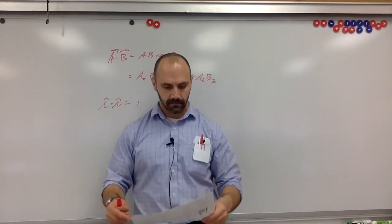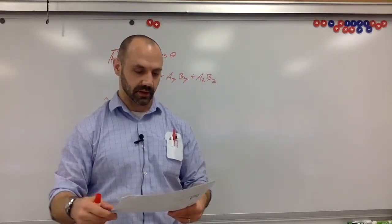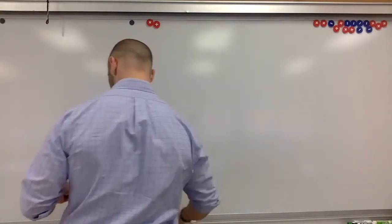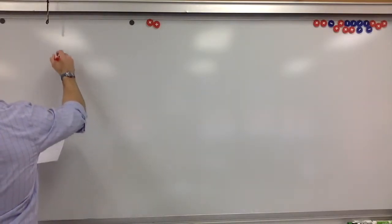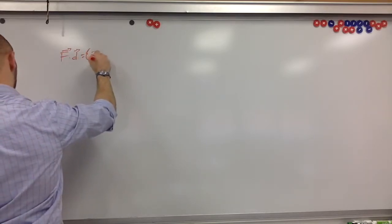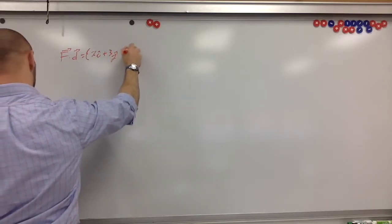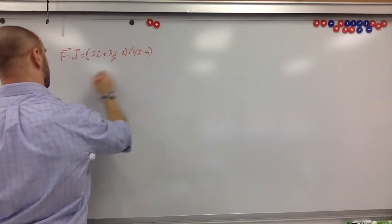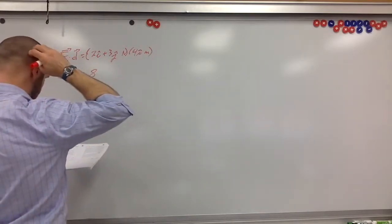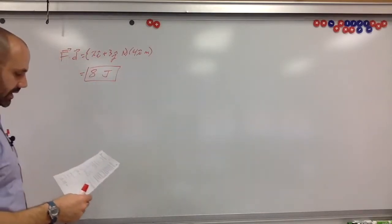Example 1: We're given a force and a displacement — calculate the work done by the force. So W = F · d = (2î + 3ĵ) N · (4î) m. The 2î and 4î give 8, and the 3ĵ component gives zero. So the answer is 8 joules.